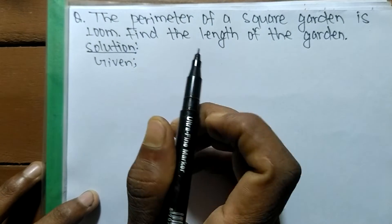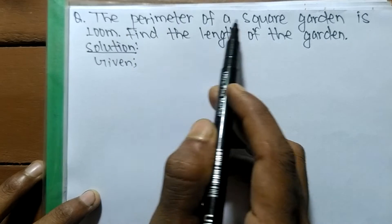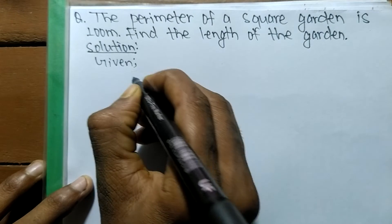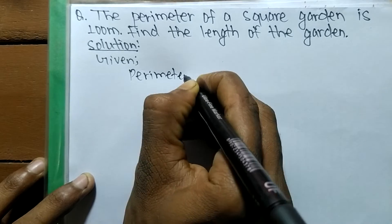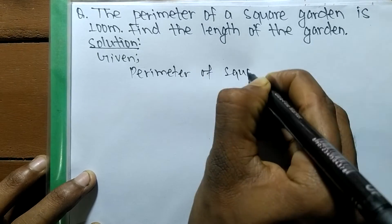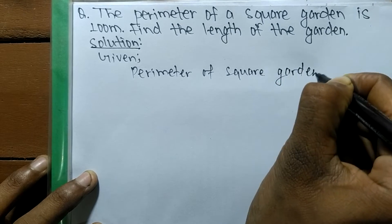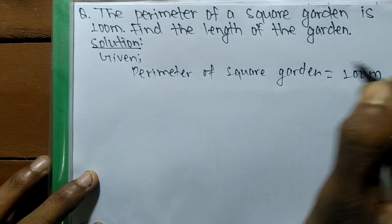First of all, we have to write down the given quantity. In the first expression, we have given the perimeter of a square garden is 100 meters. So we have given here perimeter of a square garden which is equal to 100 meters, and we have to find out the length.